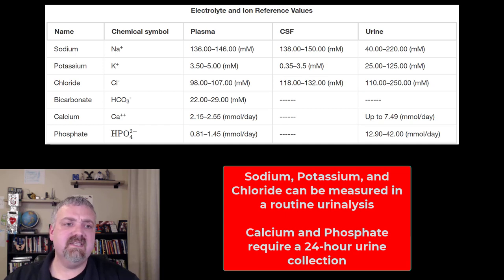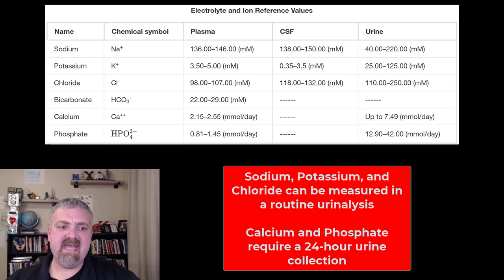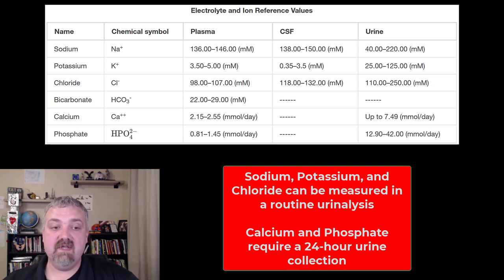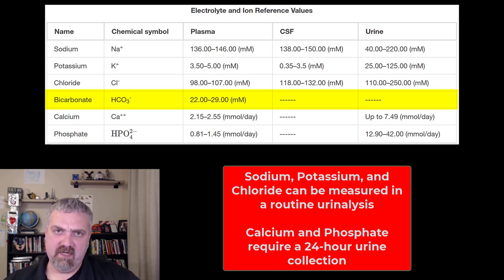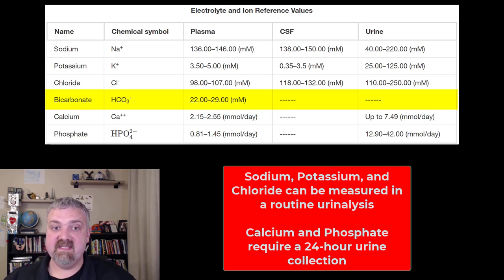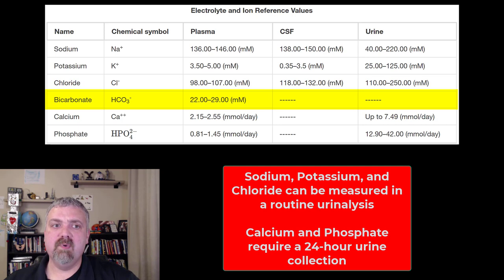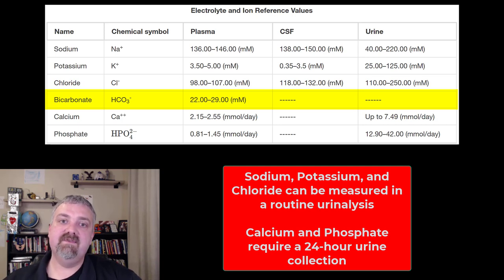Clinically, sodium, potassium, and chloride can all be measured in a routine urine sample. Calcium and phosphate are measured per day — the amount is too variable in a standard sample, so these require 24-hour urine collection to determine how much calcium or phosphate you're losing. Bicarbonate isn't in urine because it's conserved by the kidneys so it can be used as that very important buffer for carbon dioxide and carbonic acid. Those are the key electrolytes and proteins involved in all the fluids of your different fluid compartments.